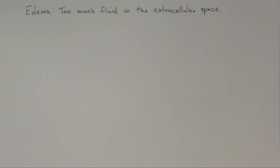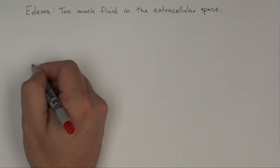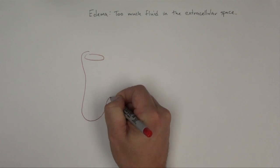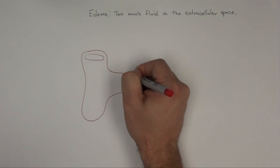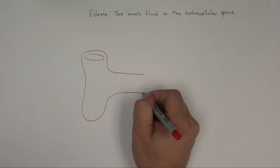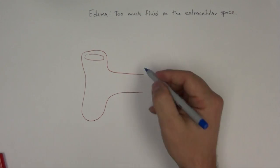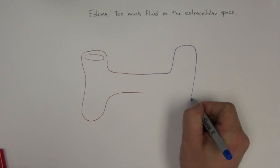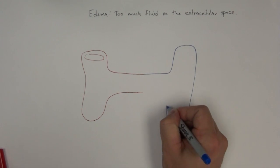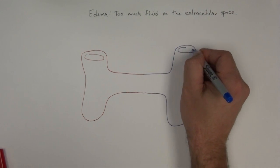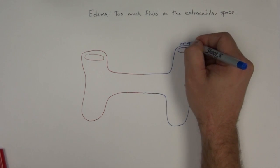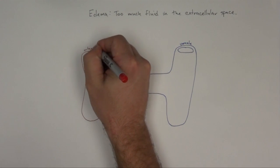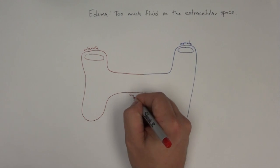Before we can talk about that though, we've got to draw ourselves out an arteriole and the venial. So this is our venial, this is arteriole, this is the capillary in between.